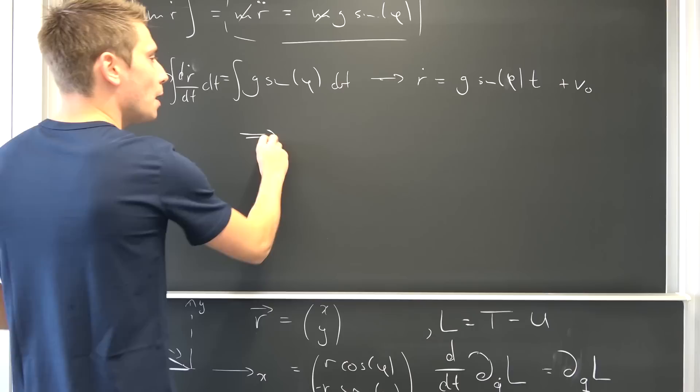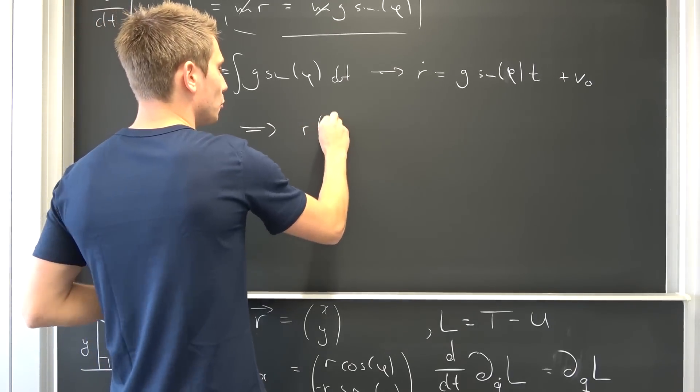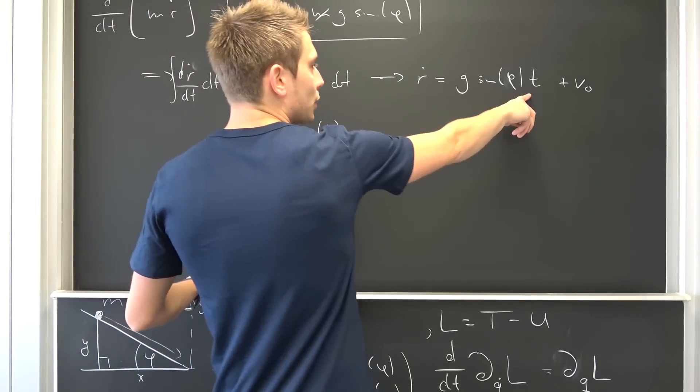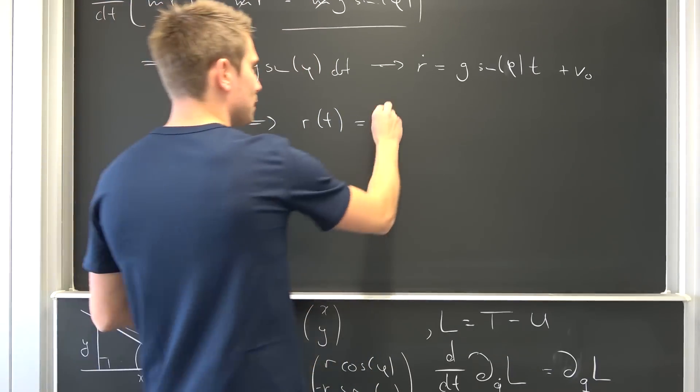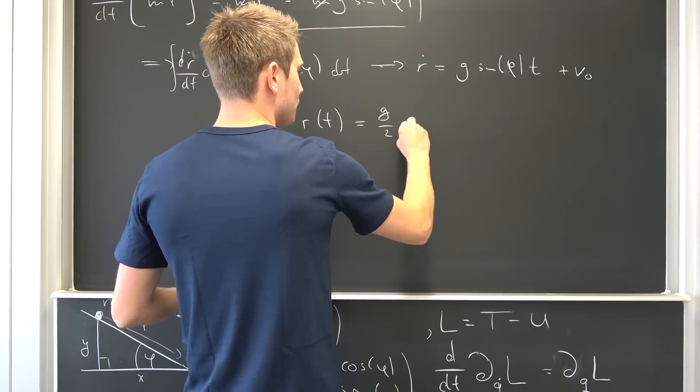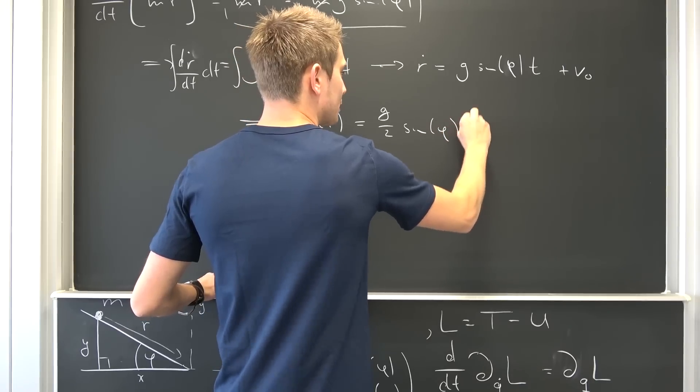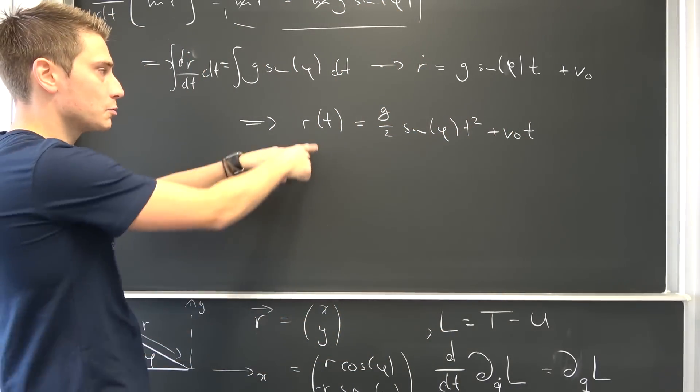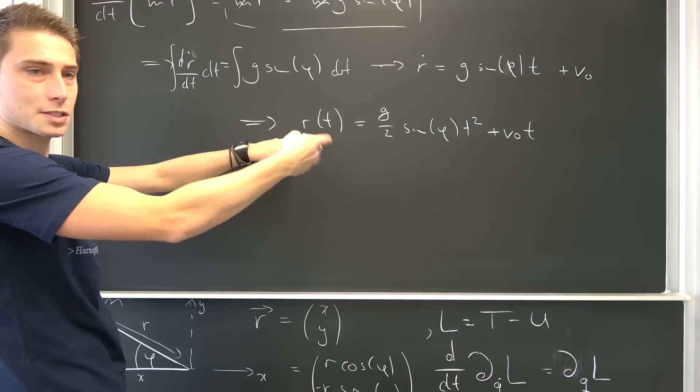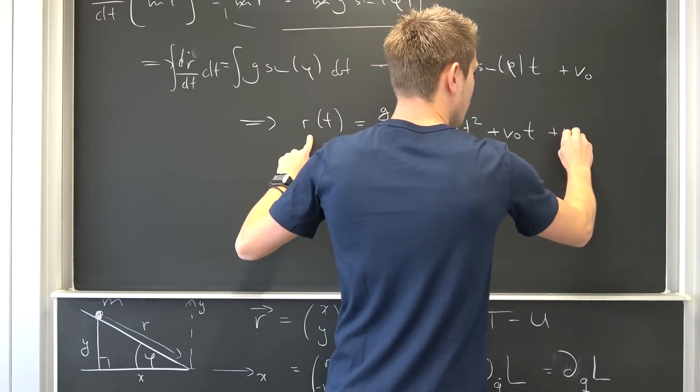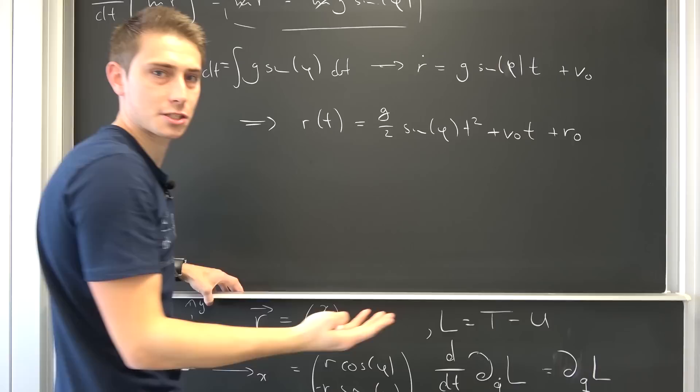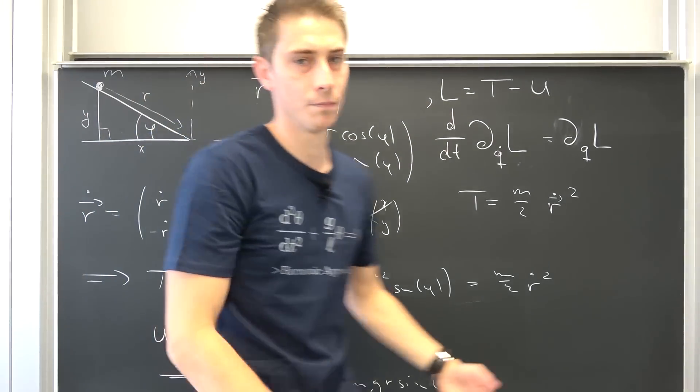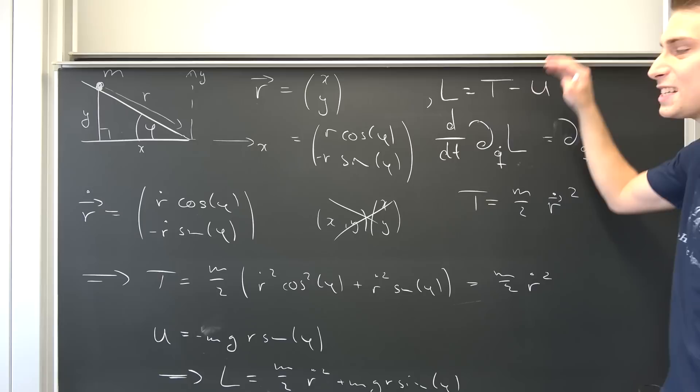And now we can integrate this yet again by the same arguments leaving us with r with respect to t. The solution to our differential equation, really nice thing, is thus integrating the polynomial in t is going to give us g over two times the sine of phi t squared plus v naught times t plus some arbitrary constant, which is simply some initial radius, some initial length of the mass being away from our origin. And this is it. We are done.